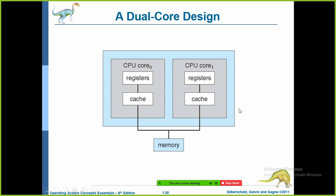Within a single CPU we imagine two dual cores. Earlier in the single processing system, there was only one core CPU. Now we have CPU core 0 and CPU core 1, and each core acts like a single CPU system. The advantages are the same as multiprocessor systems: shared registers, increased throughput, economy of scale, and increased reliability.